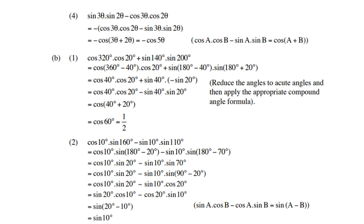B1: cos 320° times cos 20° plus sin 140° times sin 200°. Now, 320° equals 360° minus 40°, an angle in the fourth quadrant, so cos 320° equals cos 40° (cosine is positive in Q4). Sin 140° equals sin(180° minus 40°), in the second quadrant where sine is positive, so sin 40°. Sin 200° equals sin(180° plus 20°), in the third quadrant where sine is negative, so minus sin 20°. This becomes cos 40° cos 20° minus sin 40° sin 20°, which is the cosine compound rule for addition. Therefore cos(40° plus 20°) equals cos 60° equals one half.